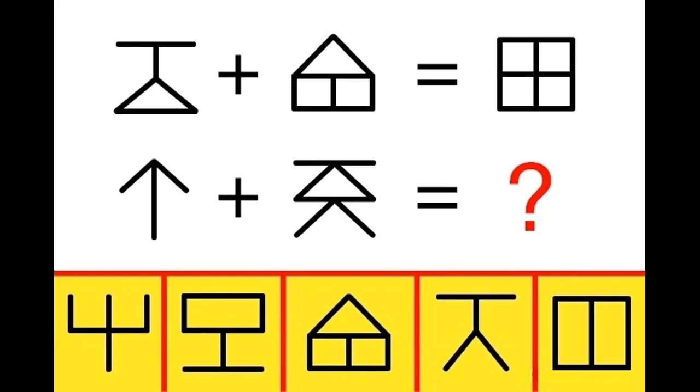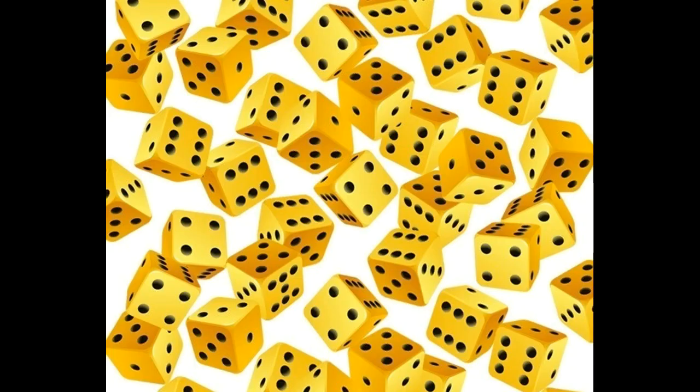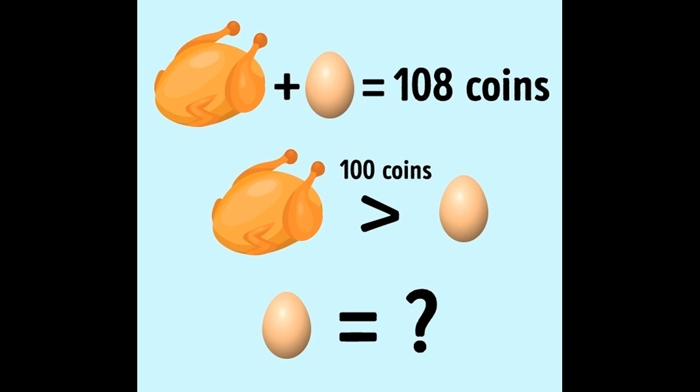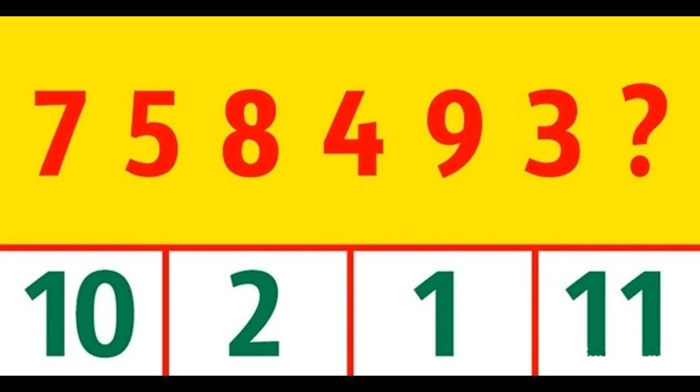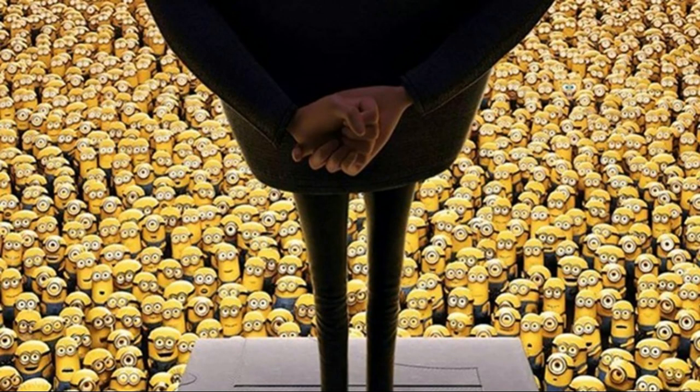First, which symbol should replace the question mark? Second, how can you divide this shape into four equal parts? Third, find the wrong dice. Fourth, how much does the egg cost? Fifth, find an A among the fours. Sixth, which number should replace the question mark? Seventh, find SpongeBob among the minions.